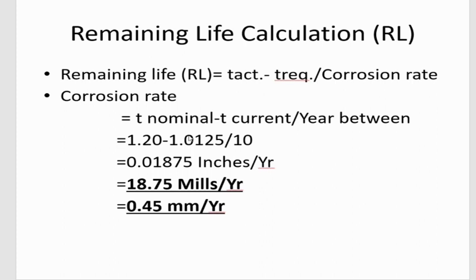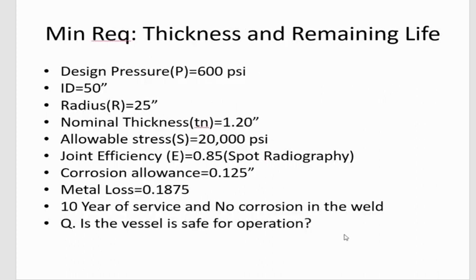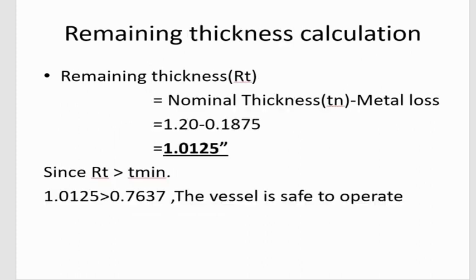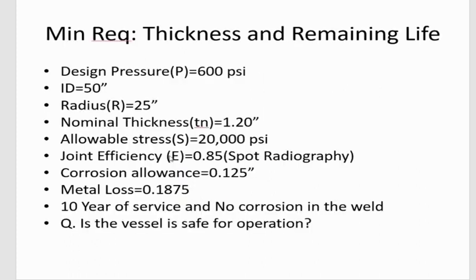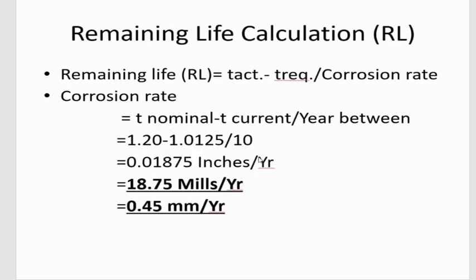The corrosion rate is the difference between nominal thickness and current thickness, divided by the years in service. Our nominal thickness is 1.20 inches, current thickness is 1.0125 inches, and years in service is 10. So corrosion rate = (1.20 − 1.0125) / 10 = 0.01875 inches per year, or approximately 0.45 millimeters per year.